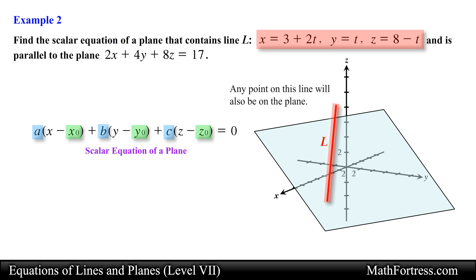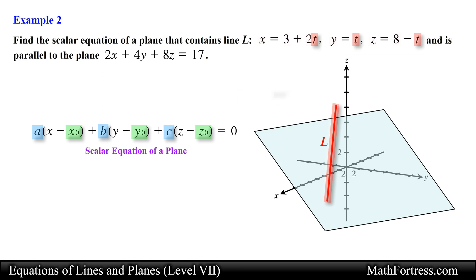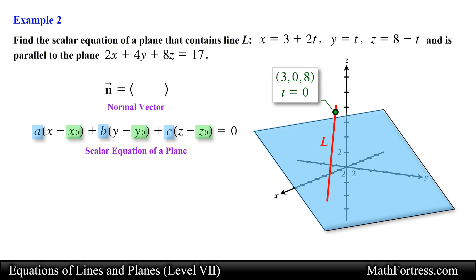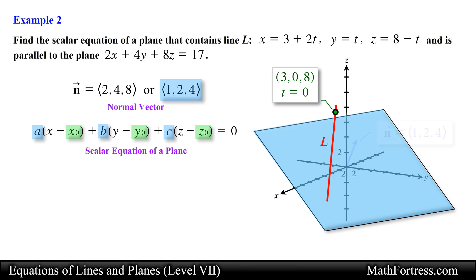Since any point on this line will also be on the plane, we can easily generate a point on the line by setting the parameter equal to a value. For simplicity's sake let's set it equal to 0, giving us the coordinates for our point. Now we need to determine a vector normal to the plane. We obtain the components of this vector by using the coefficients of the scalar equation of the parallel plane. Any constant multiple of this vector will also work, so let's divide these components by 2 to obtain nicer components.